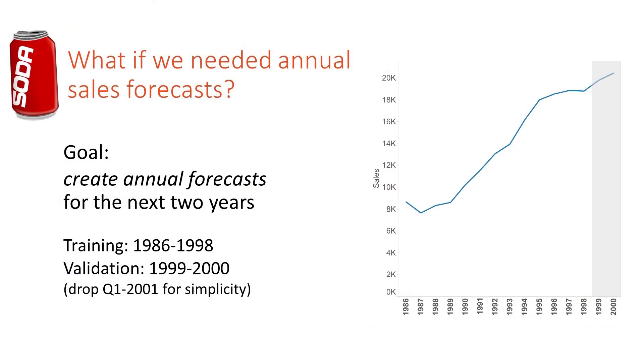Aggregating the quarterly series to annual data is useful if we need annual forecasts. For example, our goal might be to generate annual forecasts for the next two years of soft drink sales. Suppose that we keep the last two years of our series, 1999 and 2000, as the validation period, and the earlier years will be our training period. For simplicity, we're ignoring the last quarter in the data.